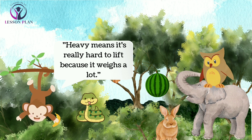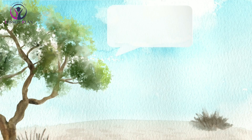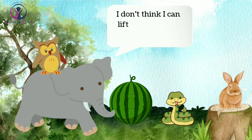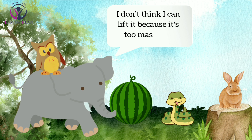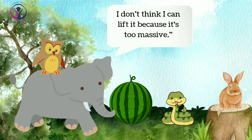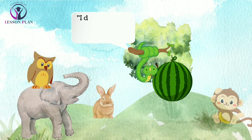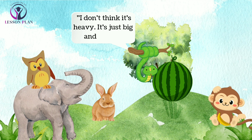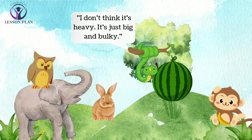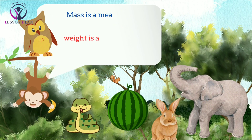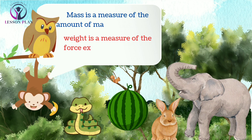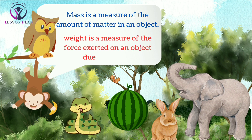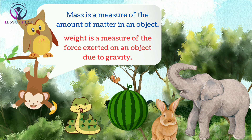The elephant, being the strongest of them all, tried to lift the watermelon but couldn't do it either. He said, "I don't think I can lift it because it's too massive." The snake, being the sneaky one, slithered up to the watermelon and said, "I don't think it's heavy, it's just big and bulky." The owl, being the wise one, said, "Let me explain. Heavy means it weighs a lot, and mass is what makes it heavy. Mass is how much matter an object has, so the watermelon is massive, and because of that it has a lot of mass, making it heavy and hard to lift."